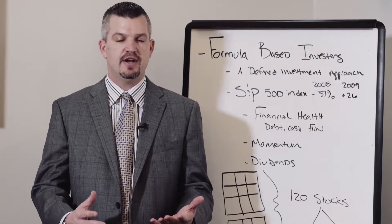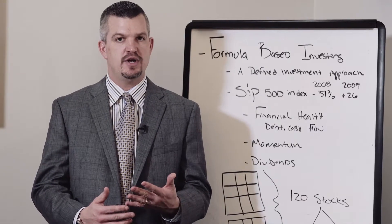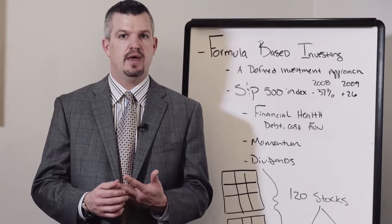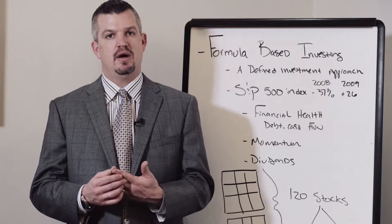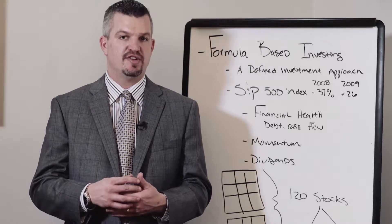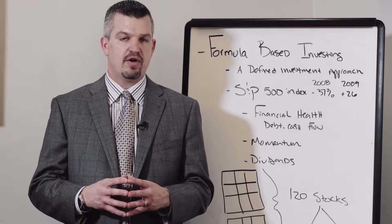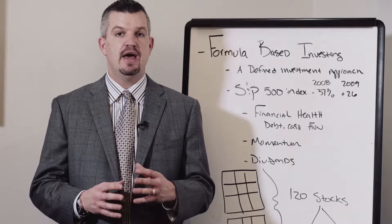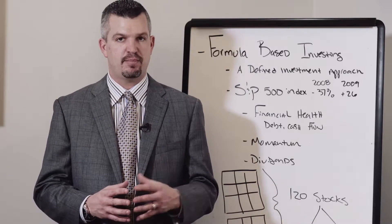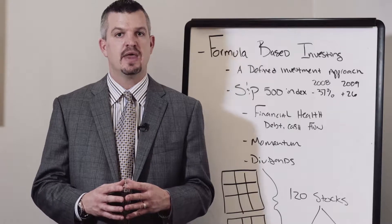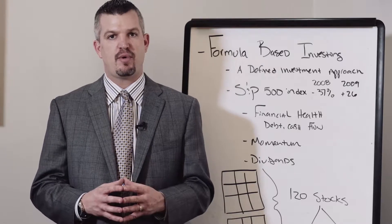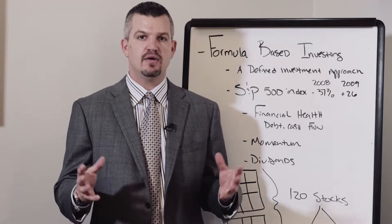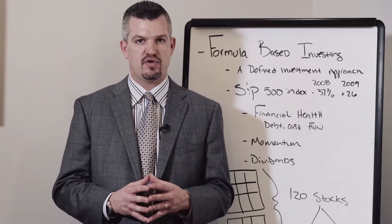Within the independent income system, we have a variety of different buckets of money that we talk about, such as current income, reliable income, midterm bucket, long-term growth, and emergency assets. In this particular episode, we're going to talk more specifically about the long-term bucket of money, and the defined investment process that we utilize — a process we coined the Freedom Formula at our office.